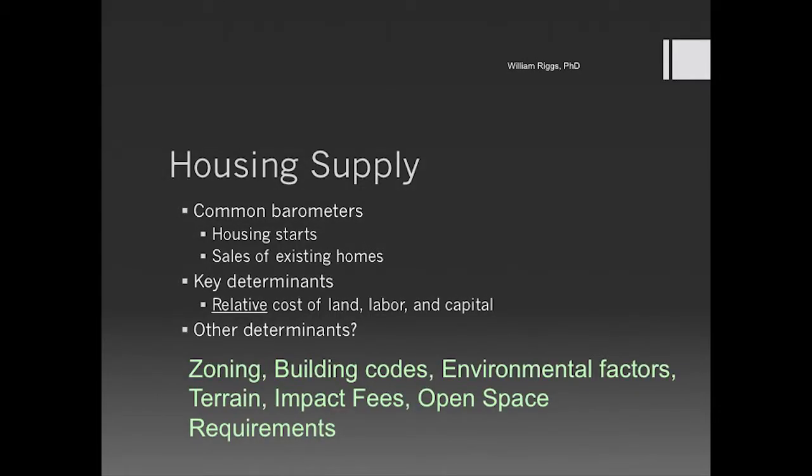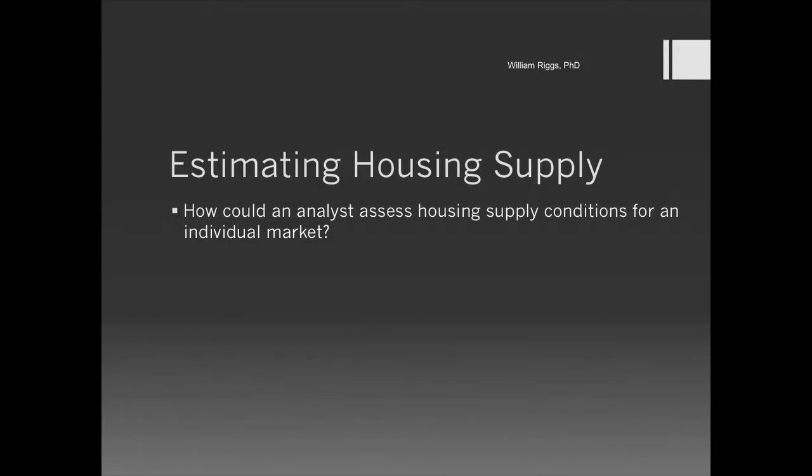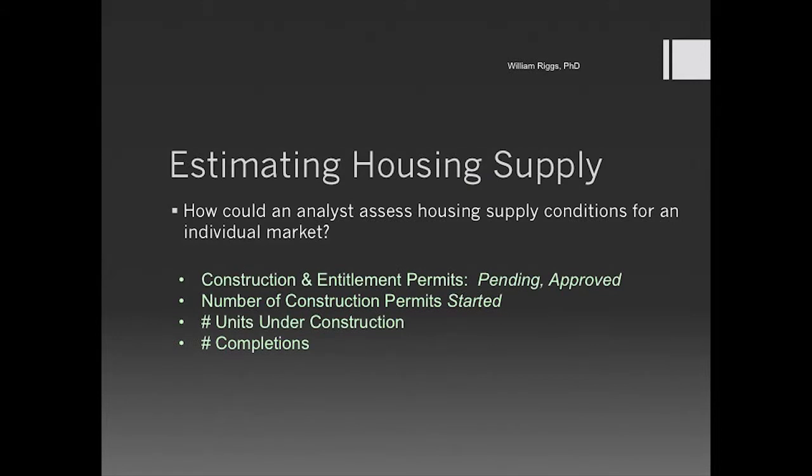As planners, we deal with other determinants including zoning, building codes, entitlement risk, and the requirements we put on projects. These are the determinants that either constrain or help housing supply. It's the area where our practice as city and regional planners impacts that of market-based developers and people bringing housing product to market.